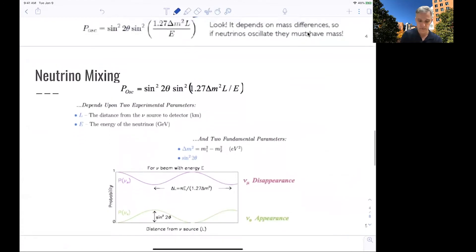So again, if we start from a two neutrino flavor model, the experimental parameters of interest here are the length of distance from the neutrino source to the detector, from the place where we generate a specific neutrino of a specific flavor to where we actually observe the flavor of the neutrino, and the energy of the neutrino.